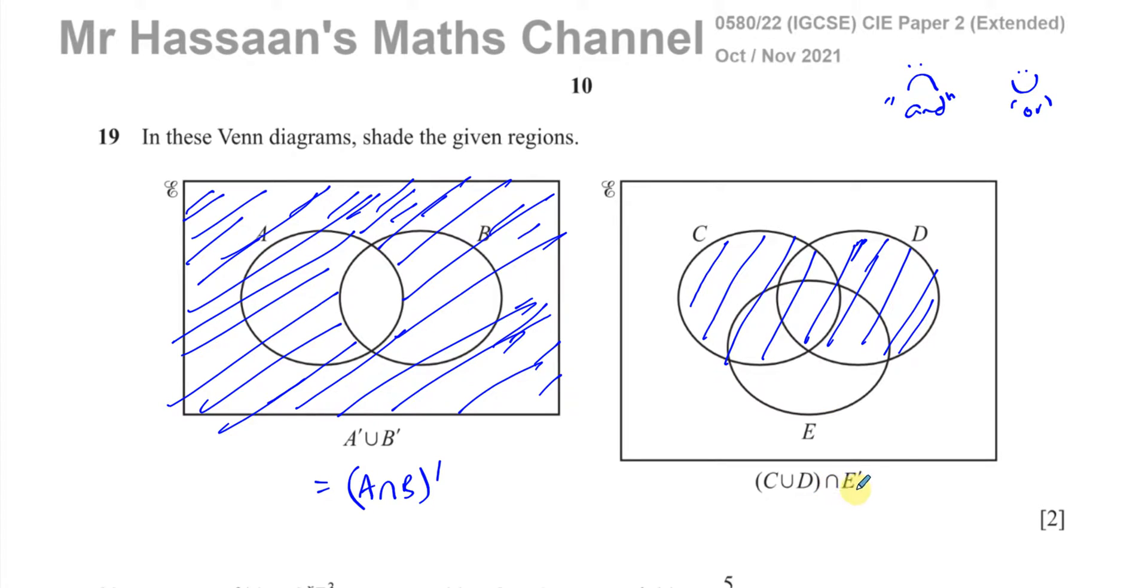Now, intersection with E complement. That means what we need to shade has to be outside of E, but it has to be part of C and D. So this part cannot be included because this is intersection. This is a strict one. So I have to get rid of anything inside E. So all of this part has to go. Because it can't be inside E, but it must be inside C and D. So if it says outside of E, that includes this area here. But I can't include it in our shading because our shading must have only C and D in it.